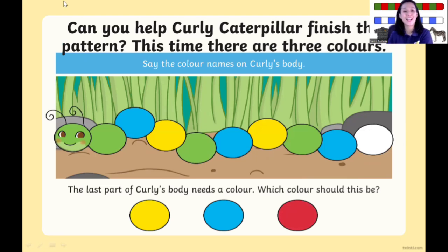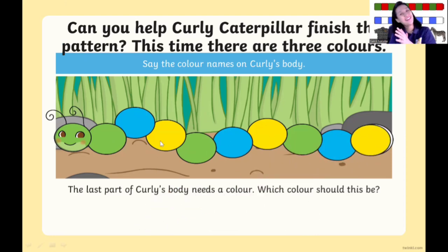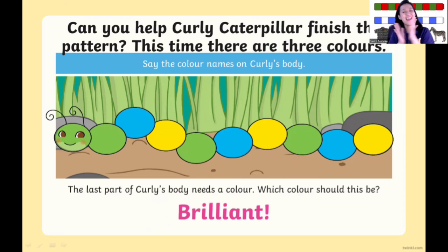Now, next caterpillar. What color is it? Green, blue, yellow, green, blue, yellow, green, blue. After blue, what comes next? Check — after blue is yellow. Yes. Wow, brilliant!